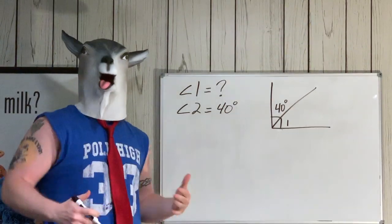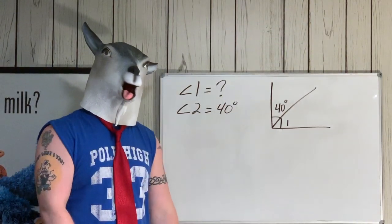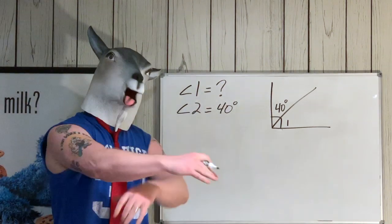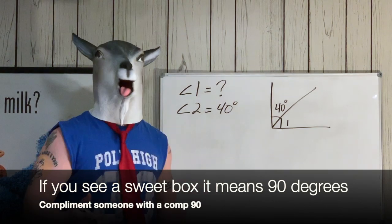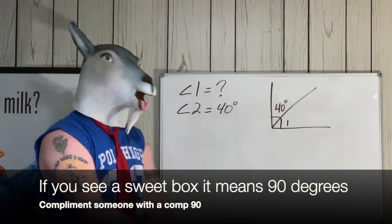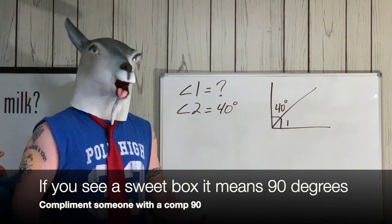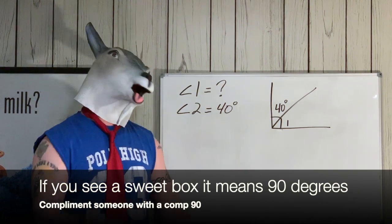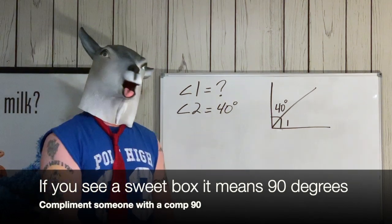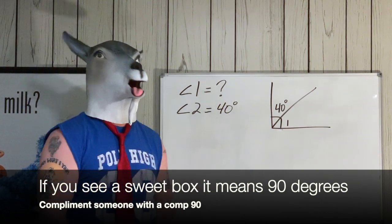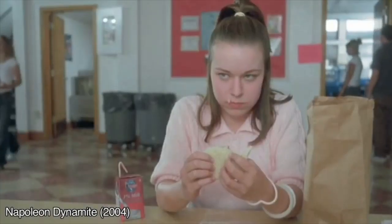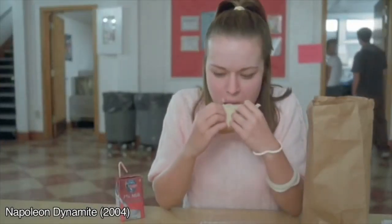Alright, so first things first, we'll take a look at complementary angles. When you see a sweet looking box in the angle, it just means it equals 90 degrees. It's comp 90, it's complementary. It's like you complimented somebody and you're like, 'Go comp 90! Yo, dude, that's an awesome sleeveless shirt, comp 90! Bro, where'd you get that tie? Comp 90!' Dude, every time you compliment somebody, it's comp 90 baby.